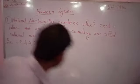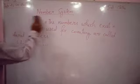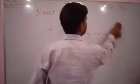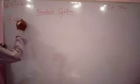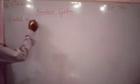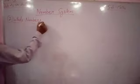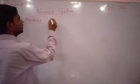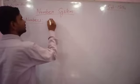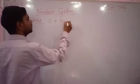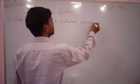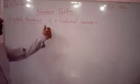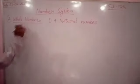After natural numbers we will see number 2 is whole numbers. 0 plus natural numbers. When we include 0 with natural numbers it is called whole numbers.